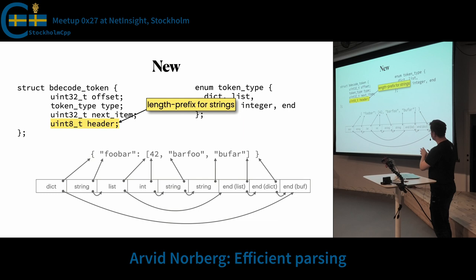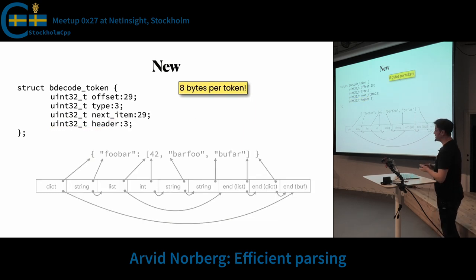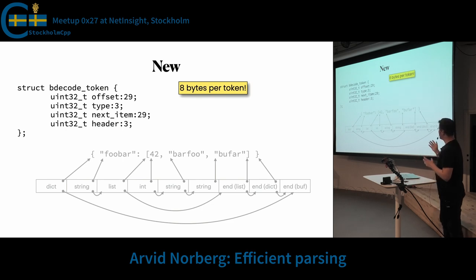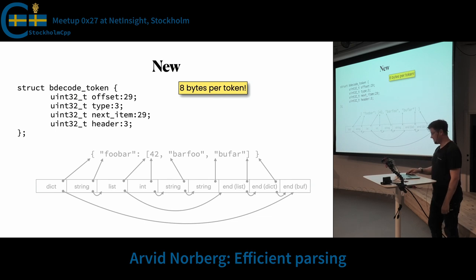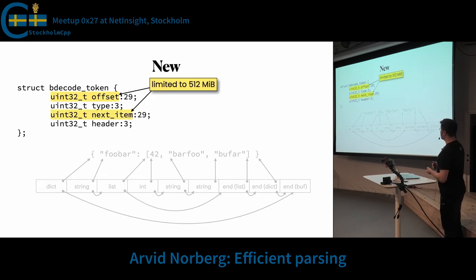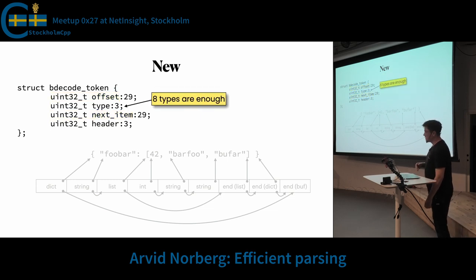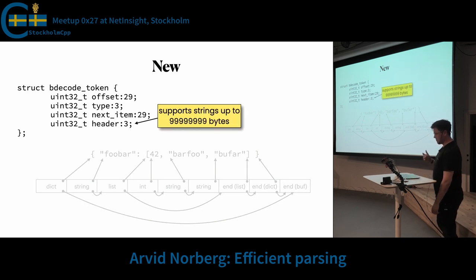The next optimization is to rearrange the members a little bit. If you make them bit fields, you can use 29 bits for the offsets and have three bits left over for the type. We had five different kinds of types, so three bits is plenty. Similarly, for next item as an index you can use 29 bits, and the header field gets three bits — also plenty. Then you have eight bytes per token, per item in this array. Very small, very fast. This obviously limits you to parsing 512 megabyte buffers, which in my case is fine. Eight different types is more than enough.